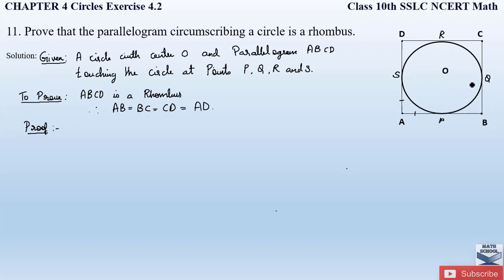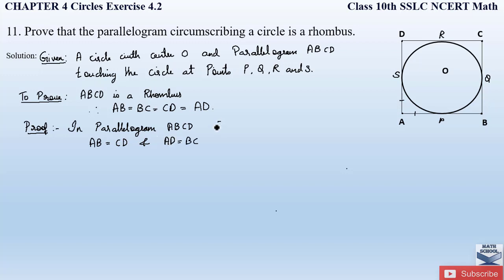We also know that since ABCD is a parallelogram, its opposite sides are equal: AB = CD and AD = BC. We write this down first — in parallelogram ABCD, opposite sides are equal, so AB = CD and AD = BC, since opposite sides in a parallelogram are equal.